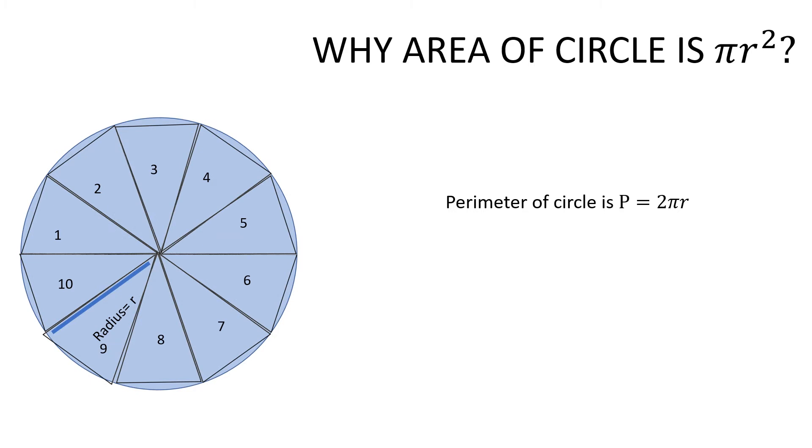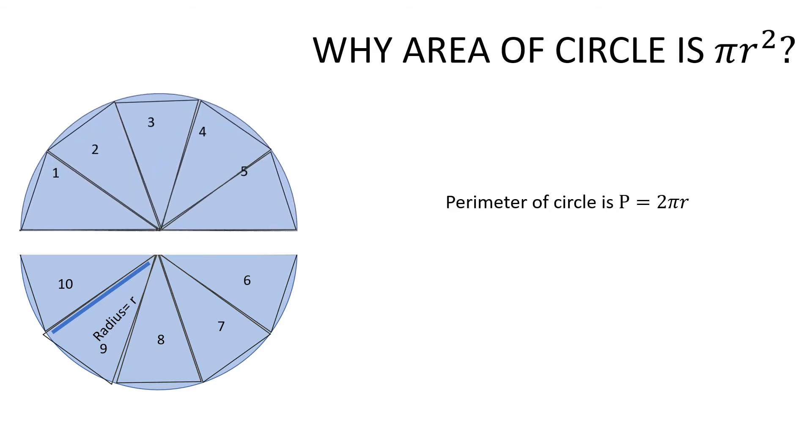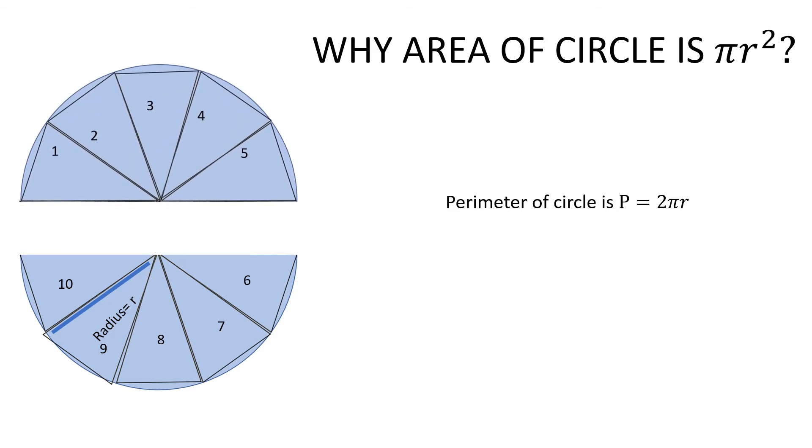And so, I just added the numbers to these triangles, so I took 10 triangles for this circle. And when I half this circle, just to remember, half the circle will have a perimeter of pi r. Similarly, the other half will also have a perimeter of pi r.